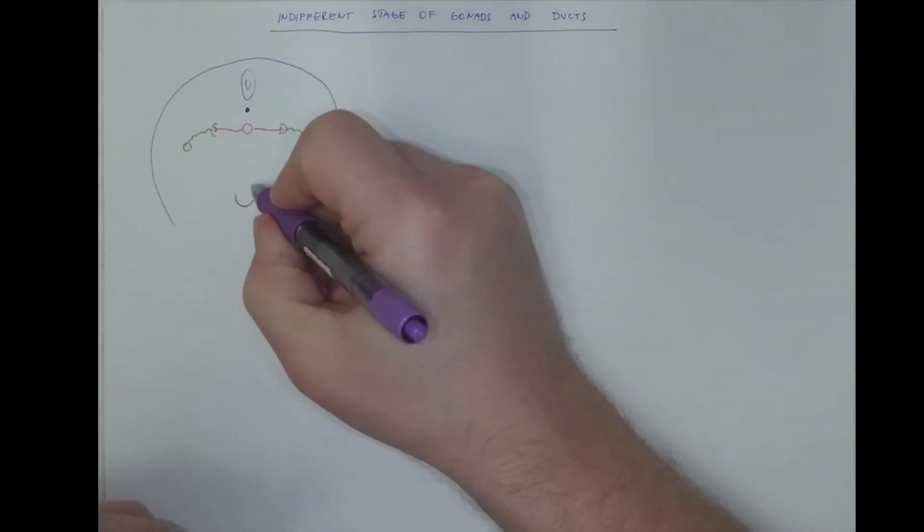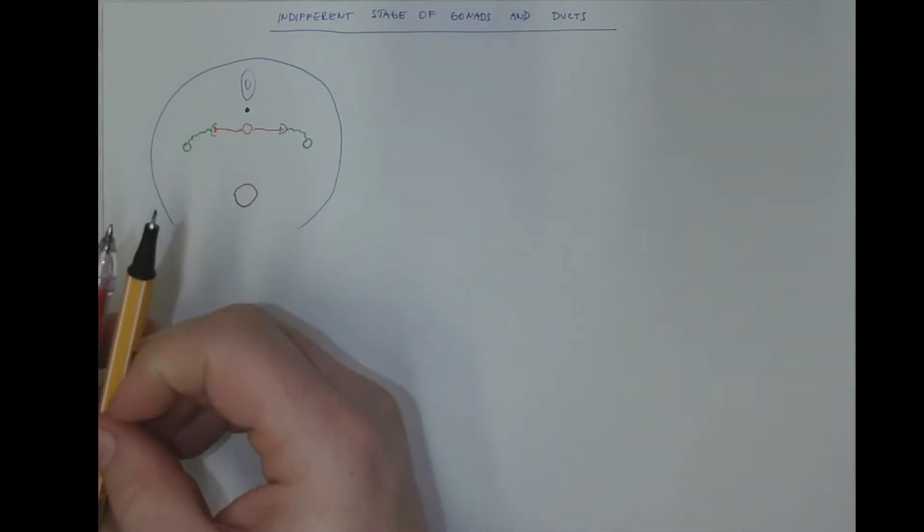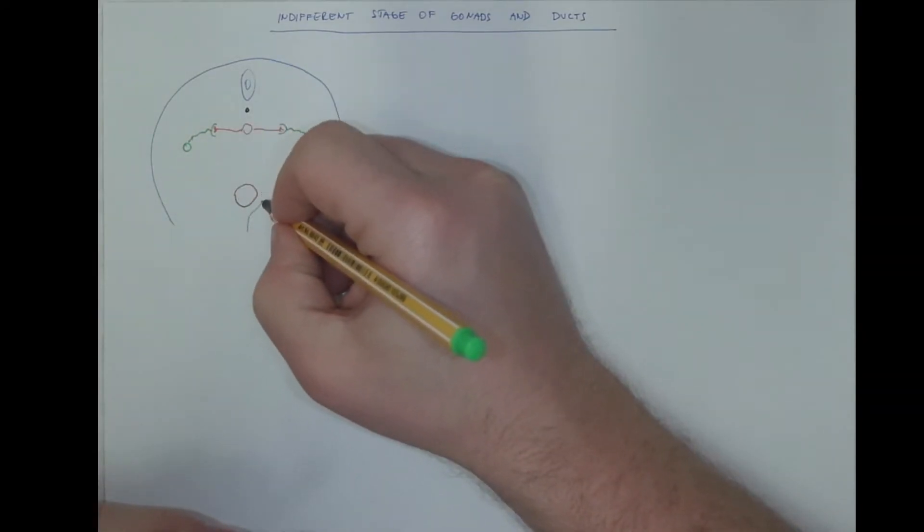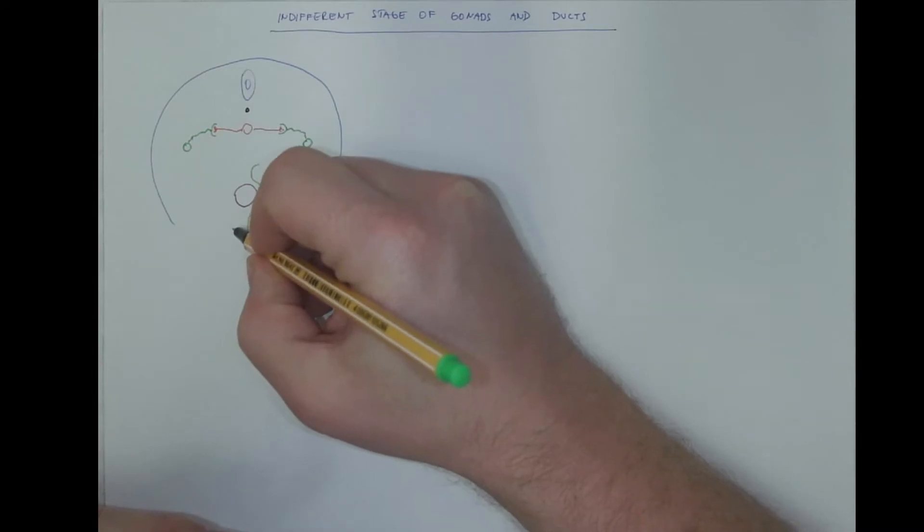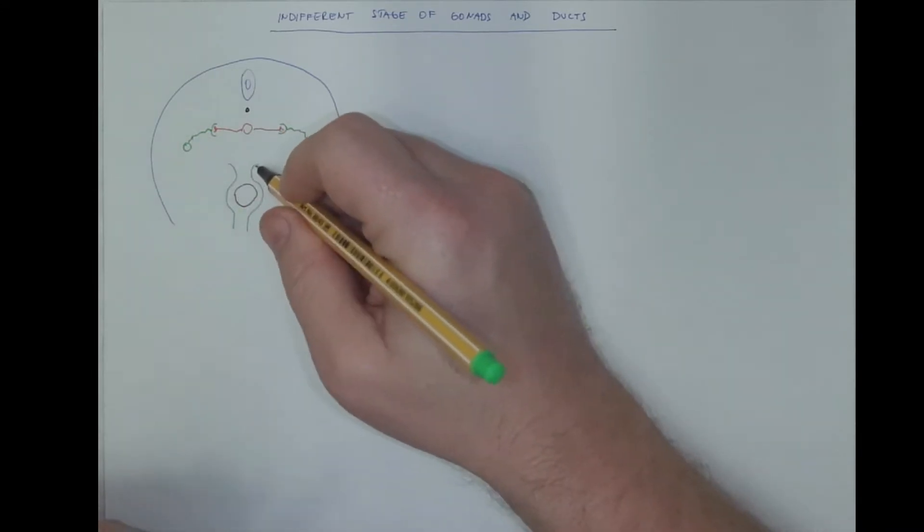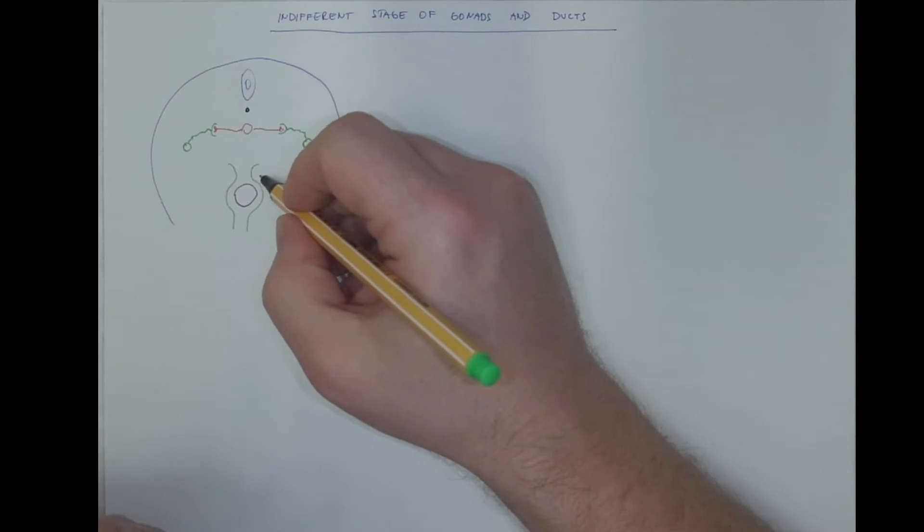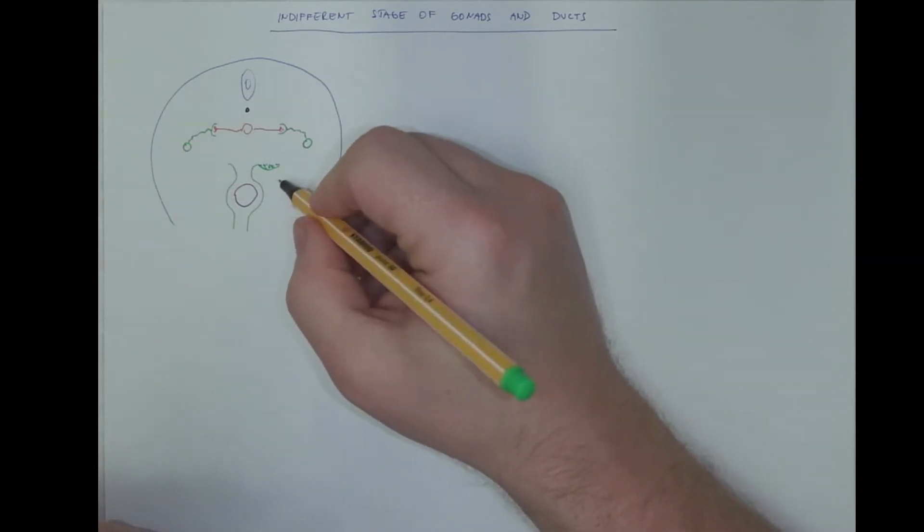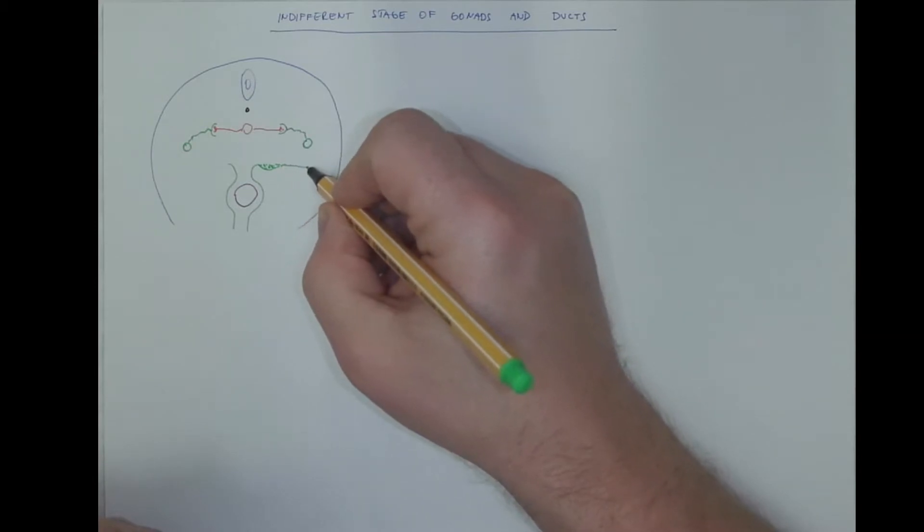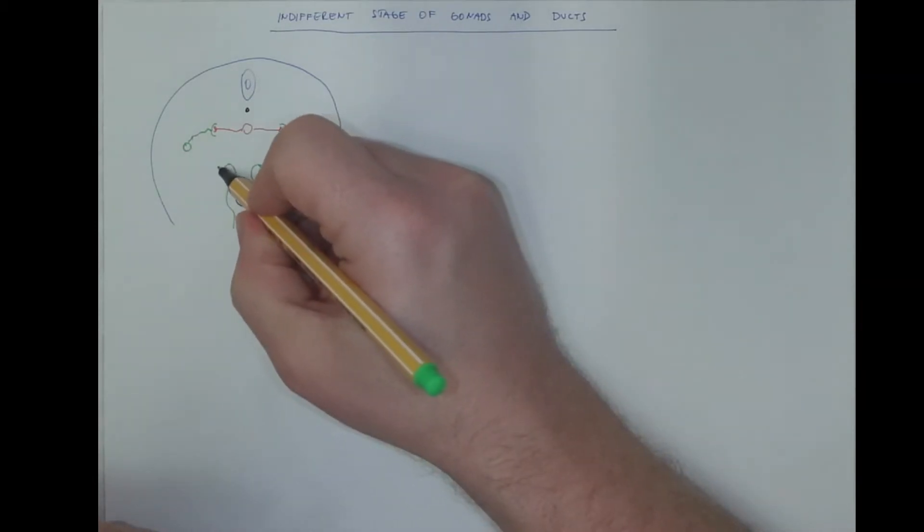This is symmetrical on both sides and is repeated many times throughout the mesonephros. Another structure here would be the intestine, surrounded by ventral and dorsal mesenteries. The dorsal body wall, which medially proliferates, the mesodermal epithelium proliferates to form a genital ridge, which is a primordium of a gonad. This is on both sides, on the left and right side.